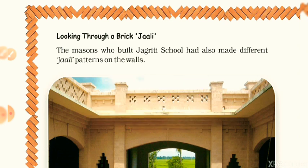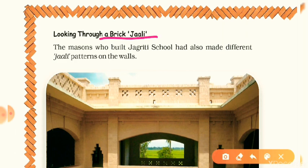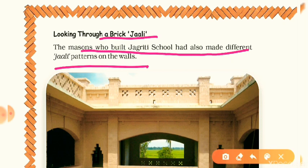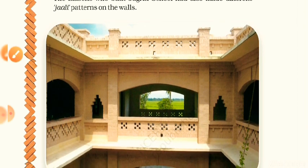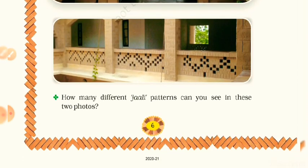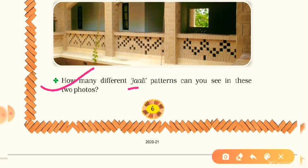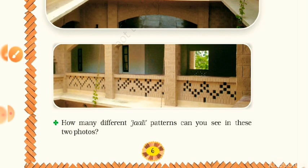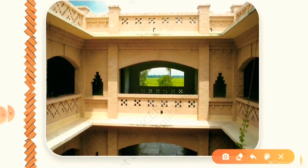Let's start with the first topic: looking through a brick jali. The masons who built Jagriti's school had also made different jali patterns on the wall. In the previous video we learned there were three masons who built Jagriti's school. They made many different jali patterns, and in the picture you can see some beautiful jali patterns in two photos. How many different jali patterns can you see in these two photos?